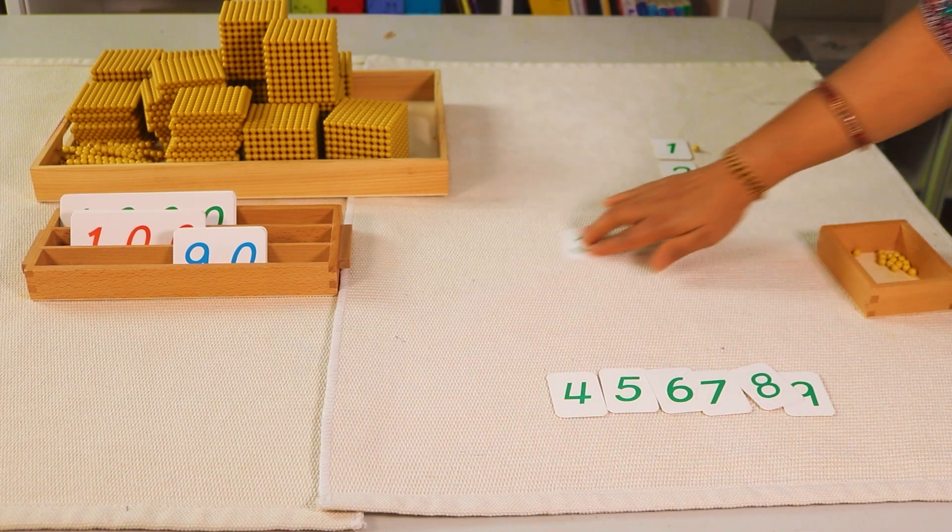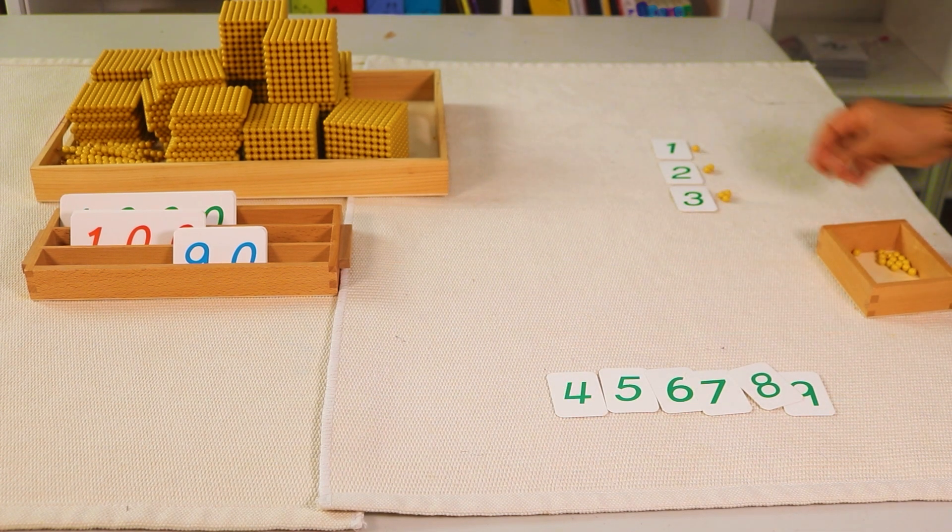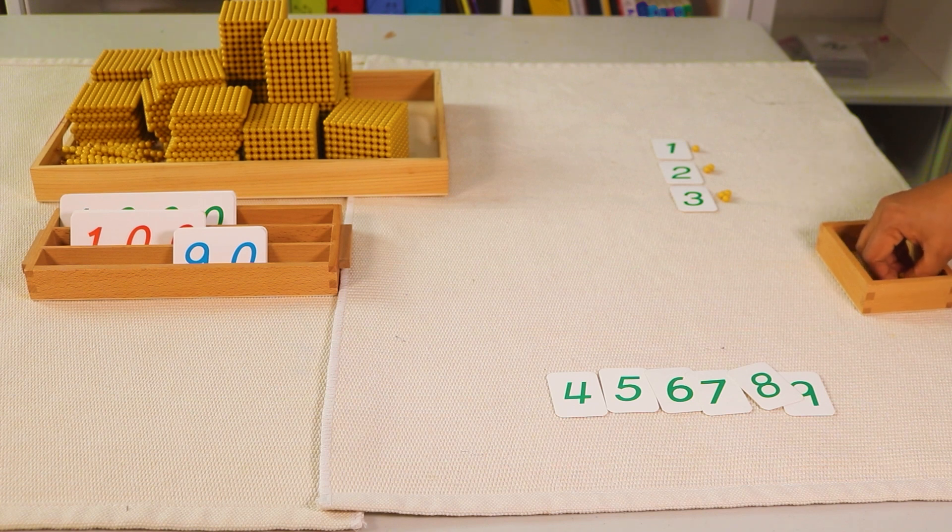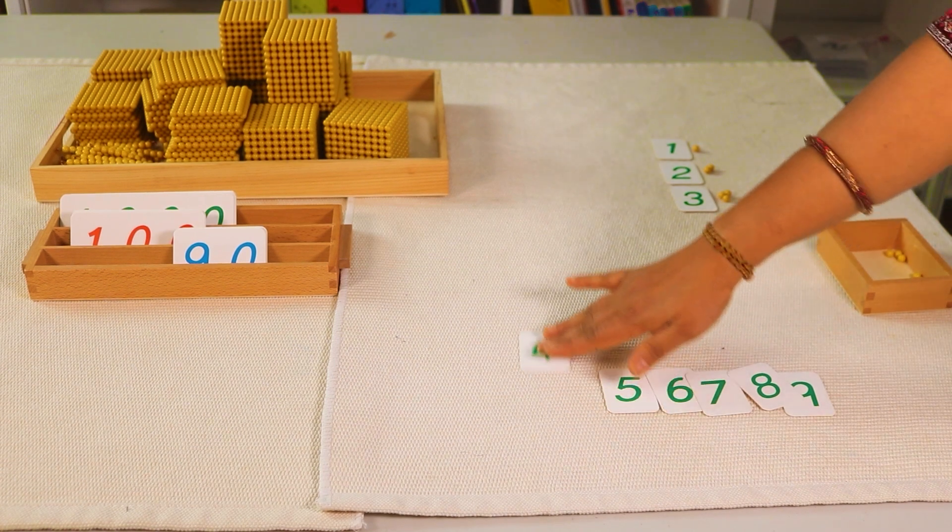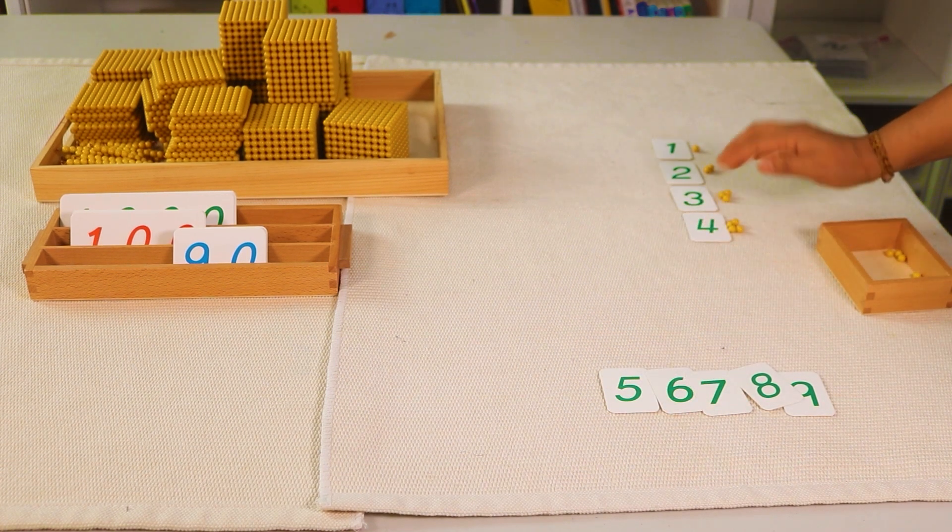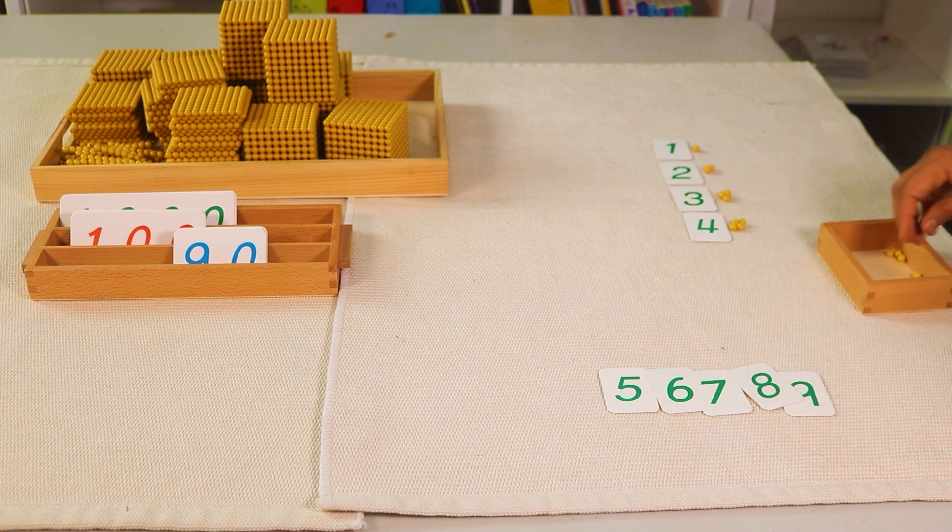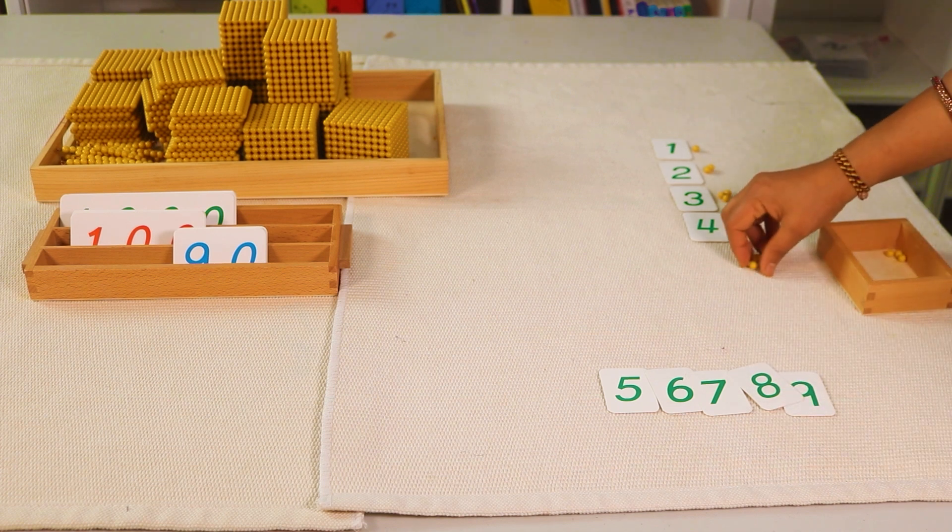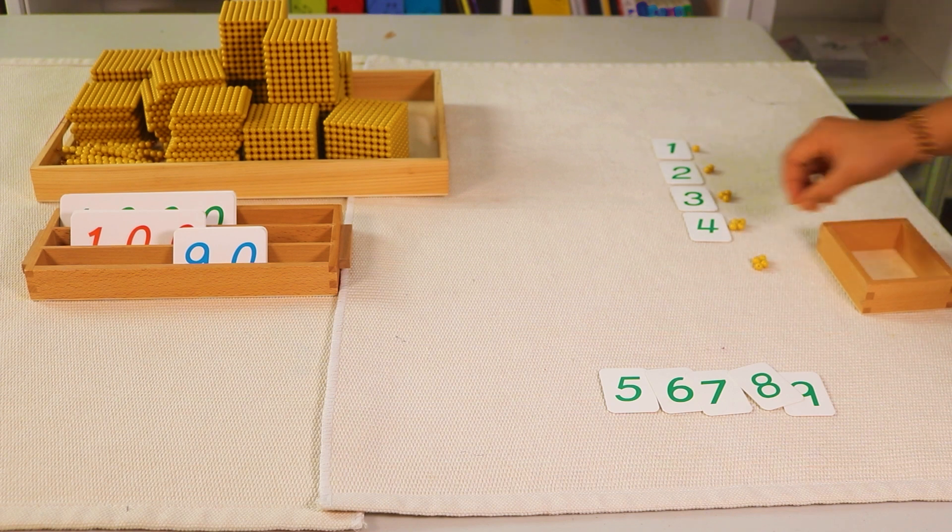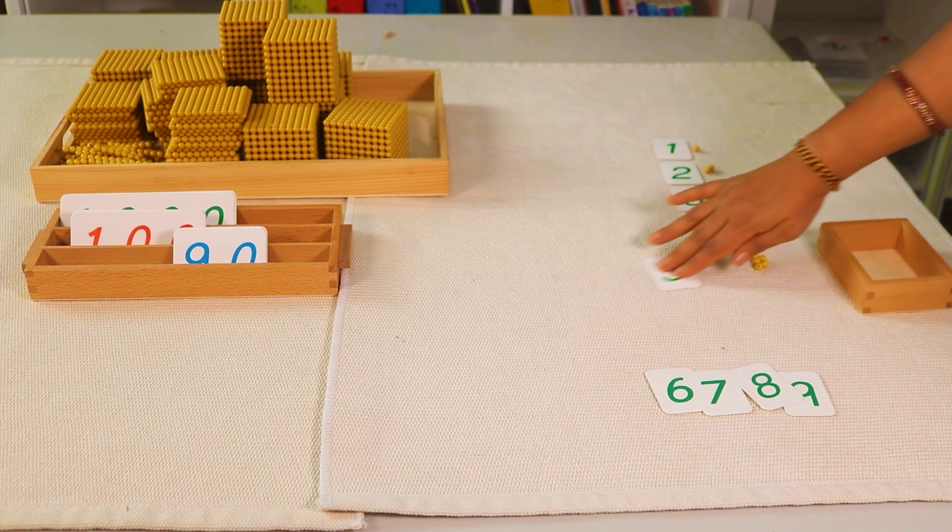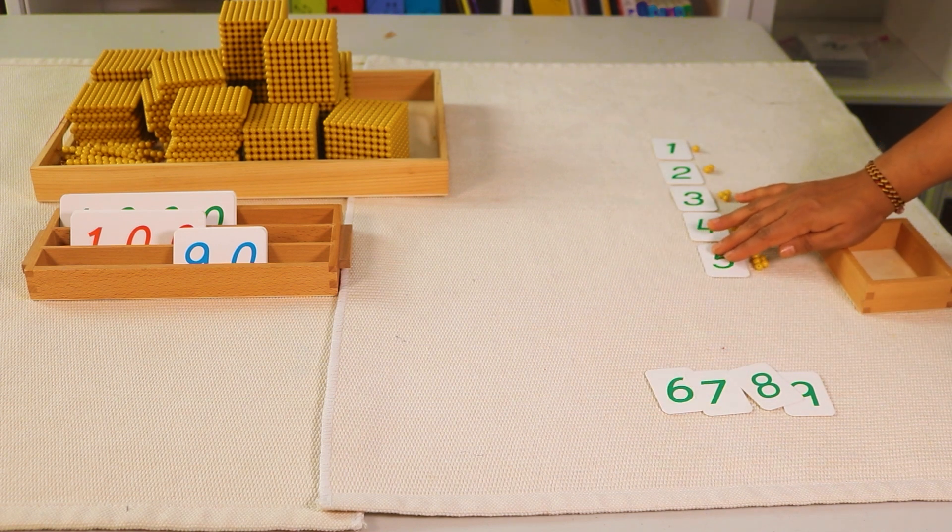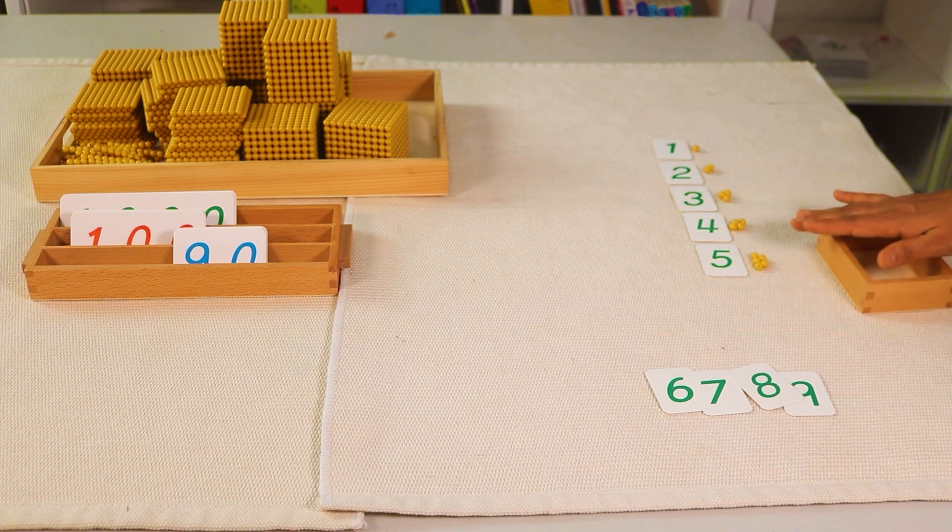This is three. Now take one, two, three, four. You can ask your child where is four. If your child is interested in continuing, you can allow your child to do the rest. Five: one, two, three, four, five. This is five.